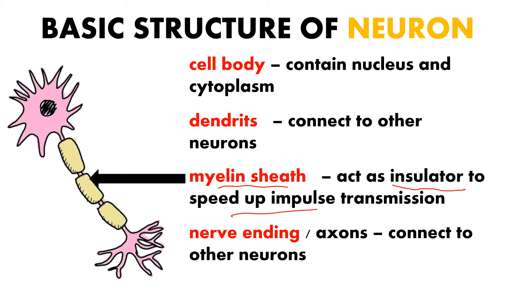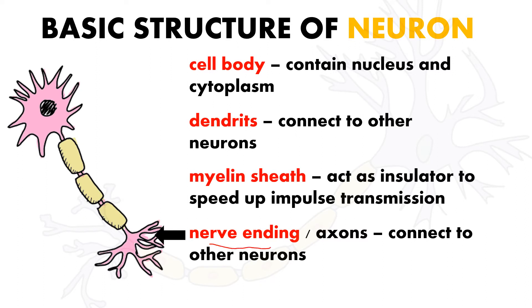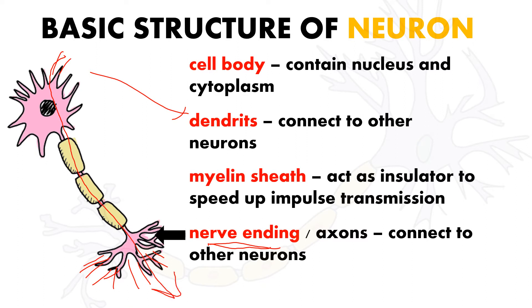Last, we have the nerve ending. The nerve ending is like a hand, while the dendrite is like hair. Don't confuse between dendrites and nerve endings — the dendrite receives the impulse, while the nerve ending sends the impulse to the other neuron.